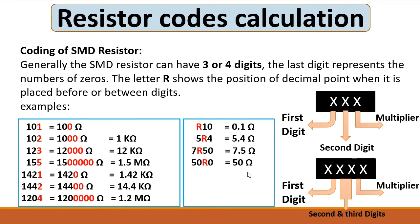Sometimes you can find resistors with letter codes. The letter R shows the position of the decimal point. For example, 'R10' means 0.1 ohms. '5R4' means 5.4 ohms. '7R50' equals 7.5 ohms. '50R0' means 50 ohms.